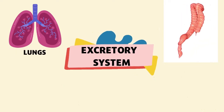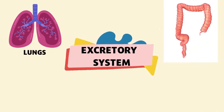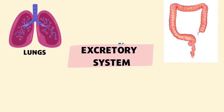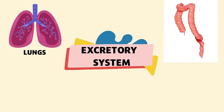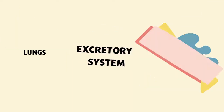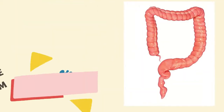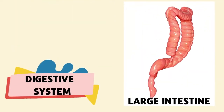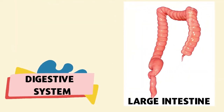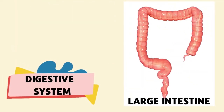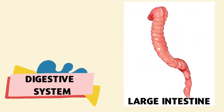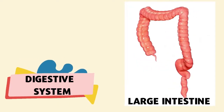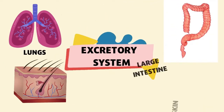Another one is the large intestine. The large intestine is found in the digestive system, which removes feces by defecation from the large intestine and out through the anus.